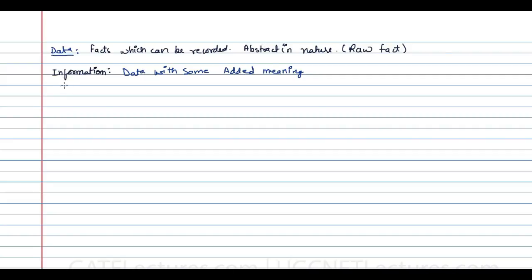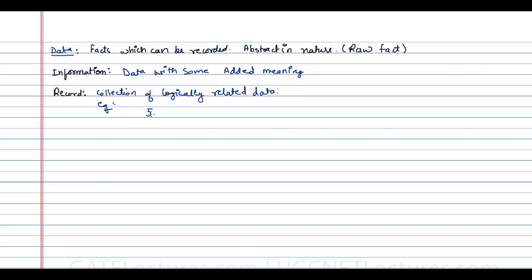There's something called a record. A record can be defined as the collection of logically related data. For example, if I have a record like student roll number 501, the name of the student is Ram, and the marks out of 600 is 503 — this is a record related to that student.